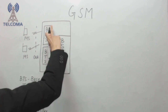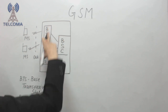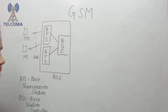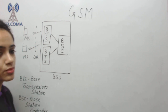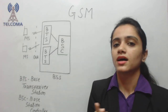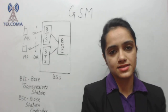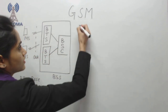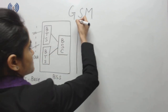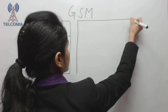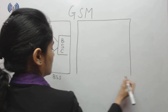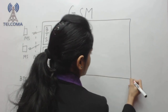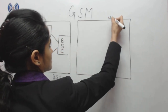The Base Station Controller controls the number of BTS units under it. It can support a minimum of 10 to a maximum of 100 BTS units around it. This completes the BSS part. Now let's move to the core network, which is NSS.